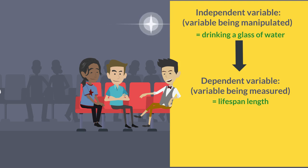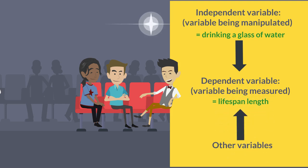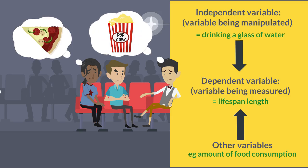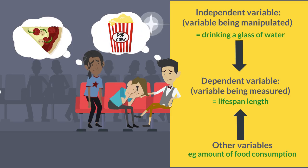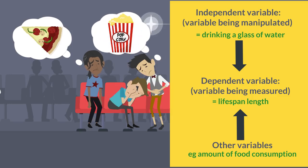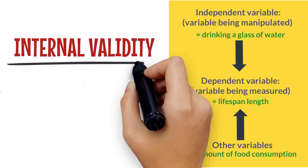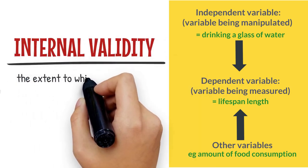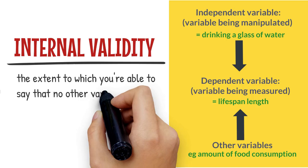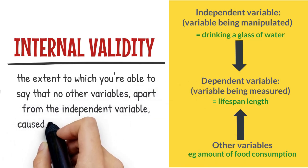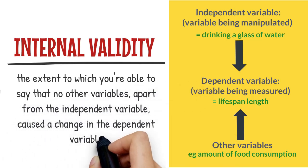In this lifespan experiment, there are of course many other factors besides the independent variable that influence the dependent variable, the least of which is locking people in a room and not feeding them for 80 years. This is what internal validity is all about — it's the extent to which you're able to say that no other variables apart from the independent variable cause the resultant change in the dependent variable.